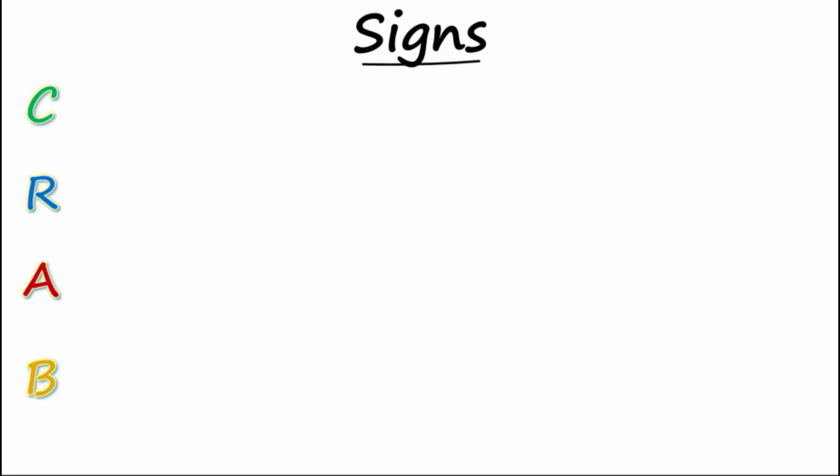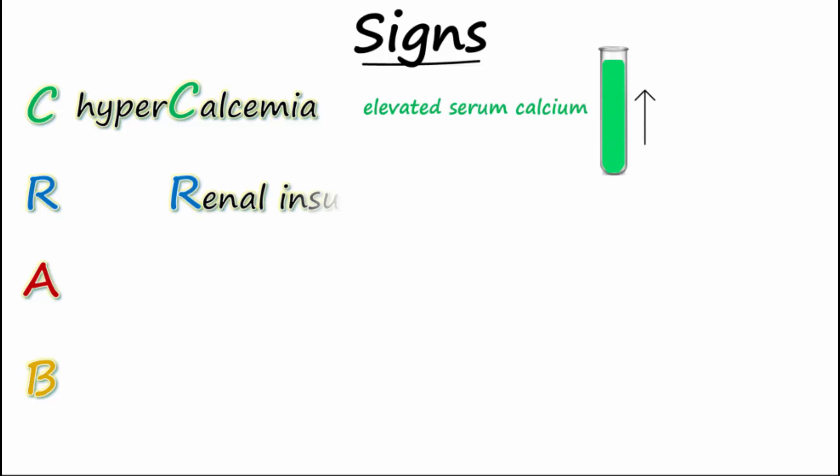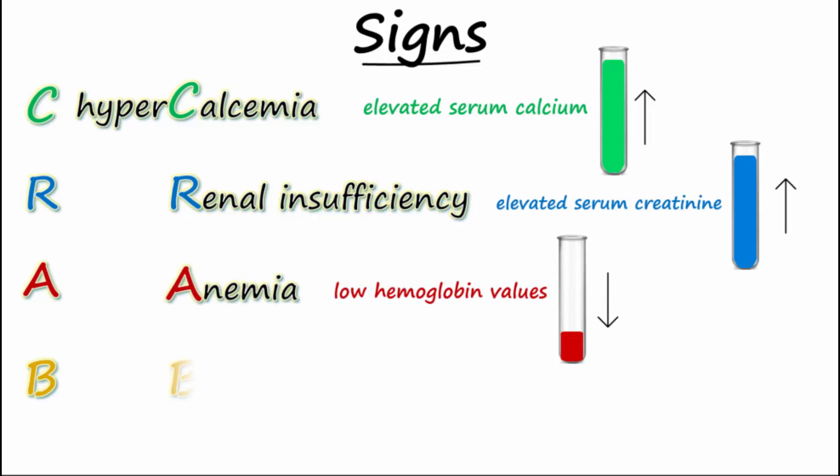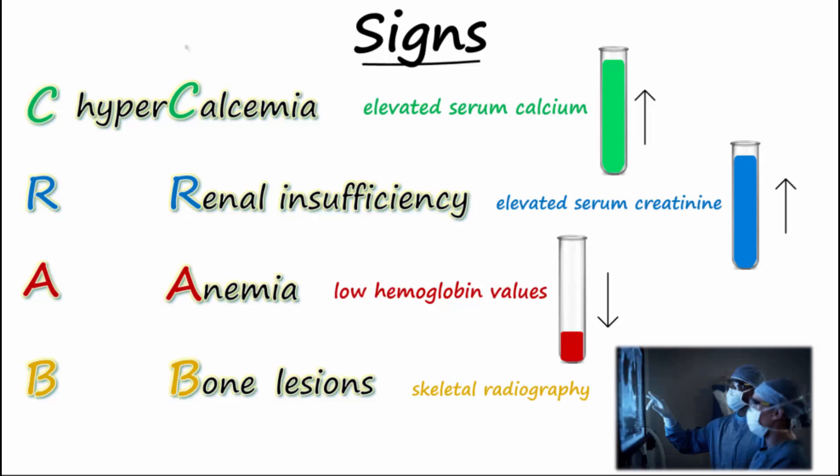The most common signs are designated by the CRAB criteria: hypercalcemia or elevated serum calcium, renal insufficiency shown by elevated serum creatinine, anemia shown by low hemoglobin values, and bone lesions shown by skeletal radiography.